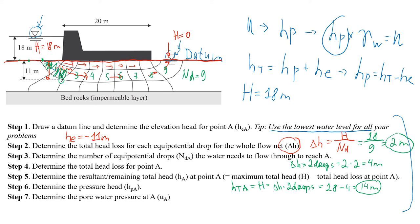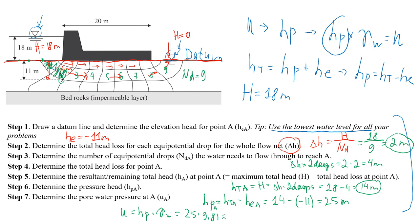Now we can find the pressure head at point A. Pressure head equals total head at A minus elevation head at A — that's 14 minus (−11), which gives us positive 25 meters. The pressure head at point A is 25 meters. We find the pore pressure by multiplying the pressure head by the unit weight of water: 25 times 9.81 gives approximately 245.3 kilonewtons per square meter. This is the pore water pressure at point A.